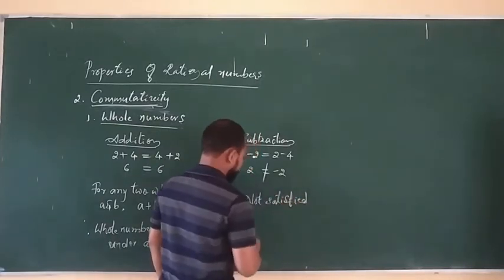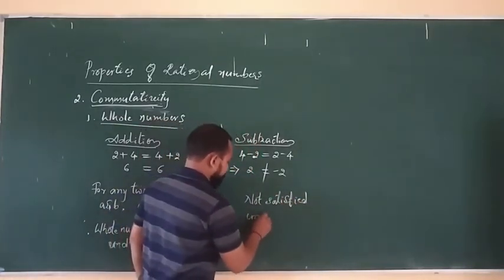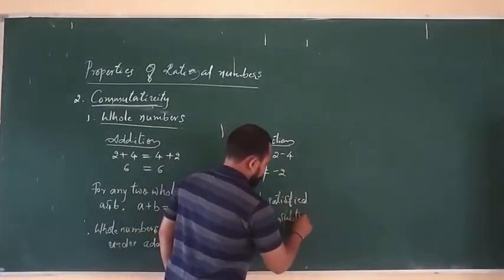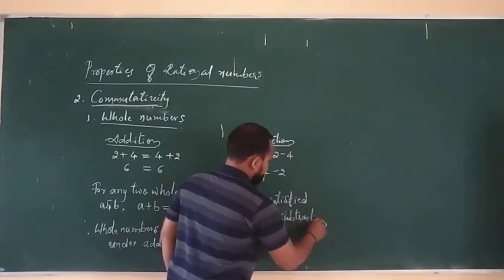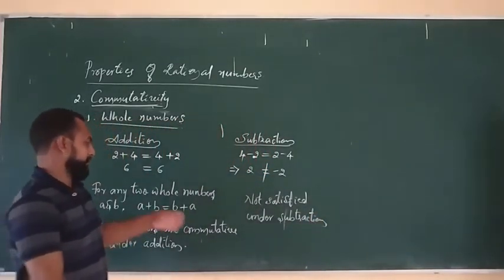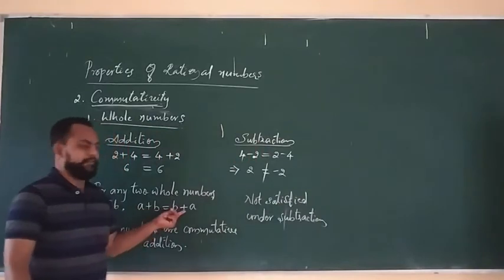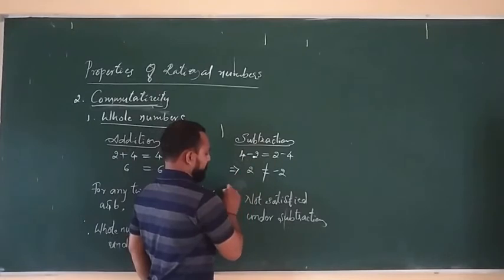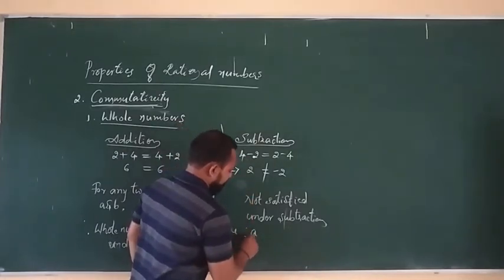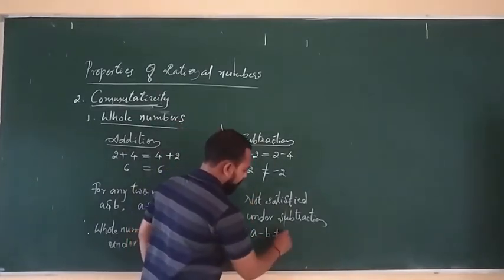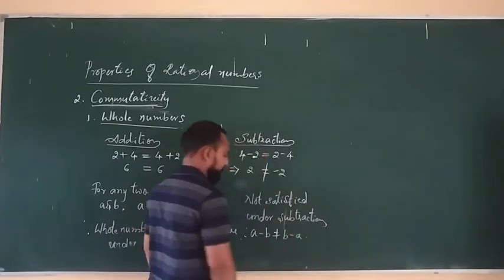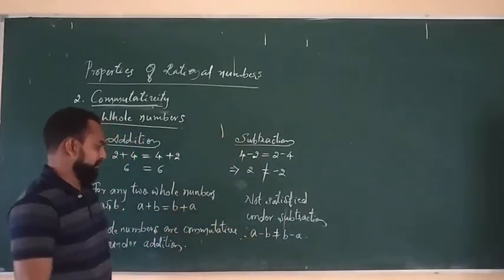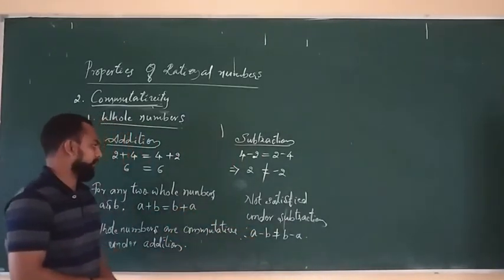The whole numbers are not satisfied under subtraction. In general, A minus B is not equal to B minus A. This is the rule of subtraction for the commutative property.